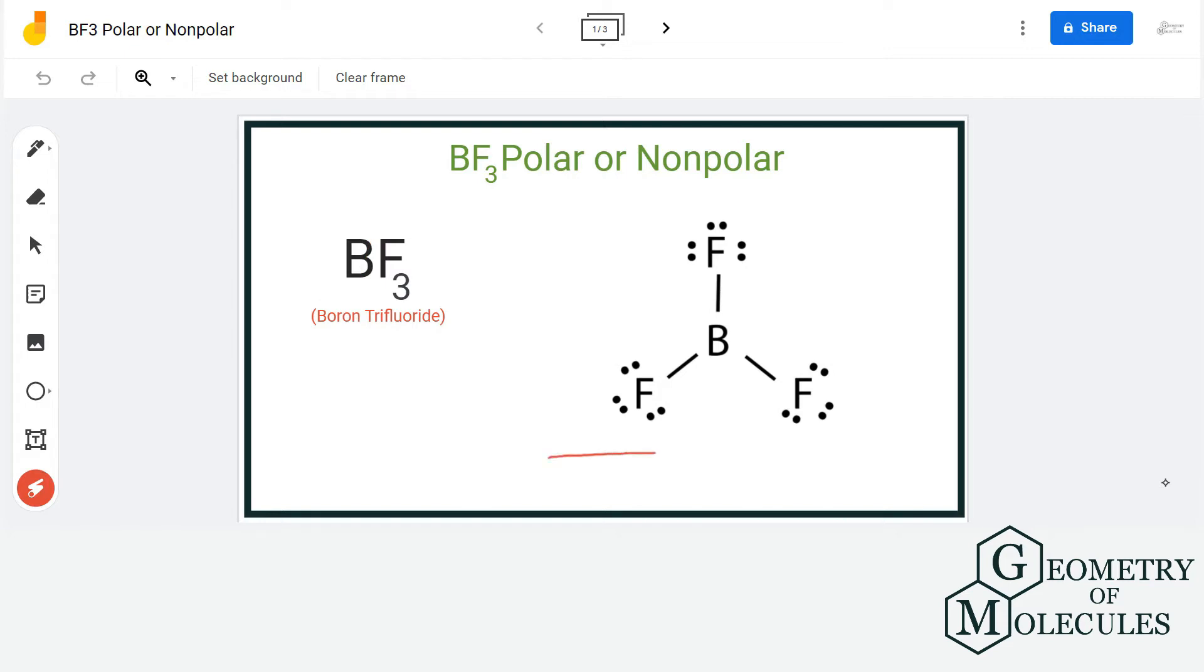will first look at its Lewis structure. Here you can see that each fluorine atom is sharing one of the valence electrons of boron and forming a bond. There are three single bonds in the structure, but